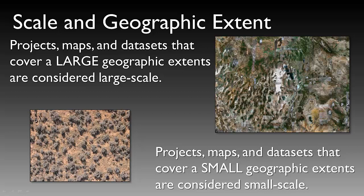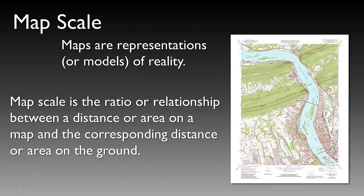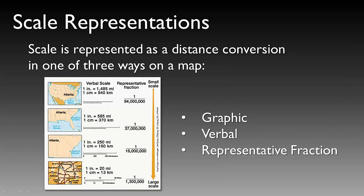Projects, maps, and datasets that cover a large geographic extent are considered large scale. Those covering a small geographic extent are considered small scale. A map scale is the ratio or relationship between a distance or area on a map and the corresponding distance or area on the ground. Scale is represented as a distance conversion in one of three ways: a graphic scale, a verbal scale, or a representative fraction.